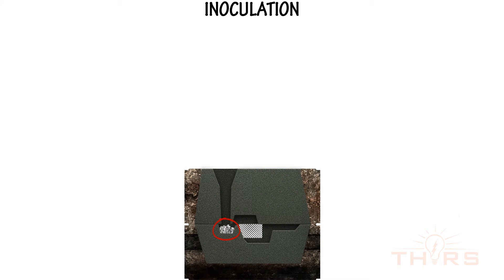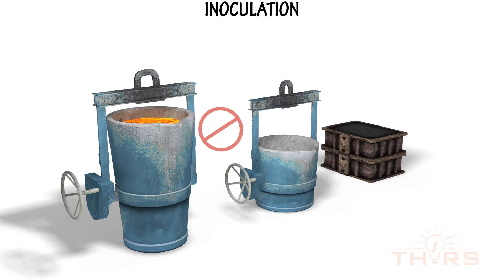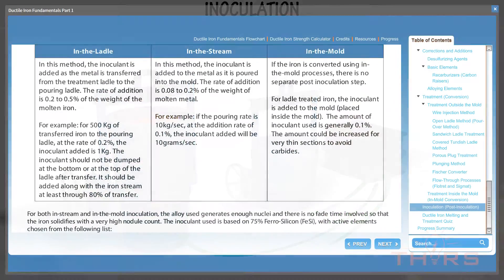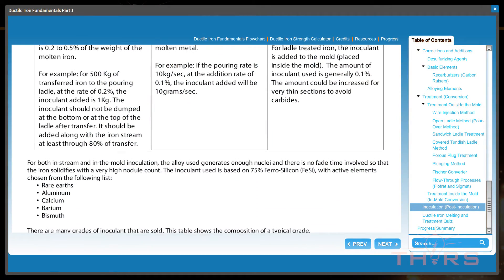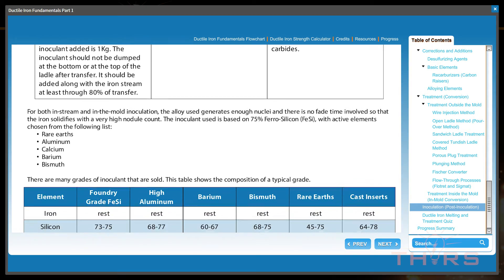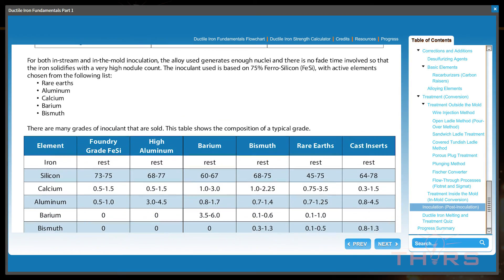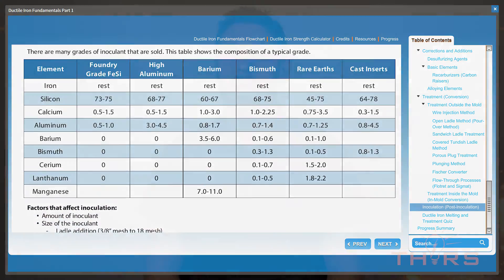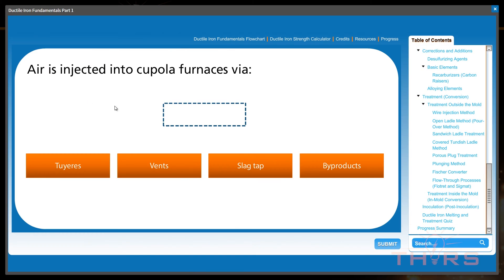Ductile Iron Fundamentals Part 1 has a great 3D animation that discusses some of the important aspects of inoculation. The course also provides additional tools to help learners understand inoculation, such as a table showing the various chemistry ranges of elements found in standard ferrosilicon alloys. And to test your knowledge, the courses come equipped with interactive quiz questions.